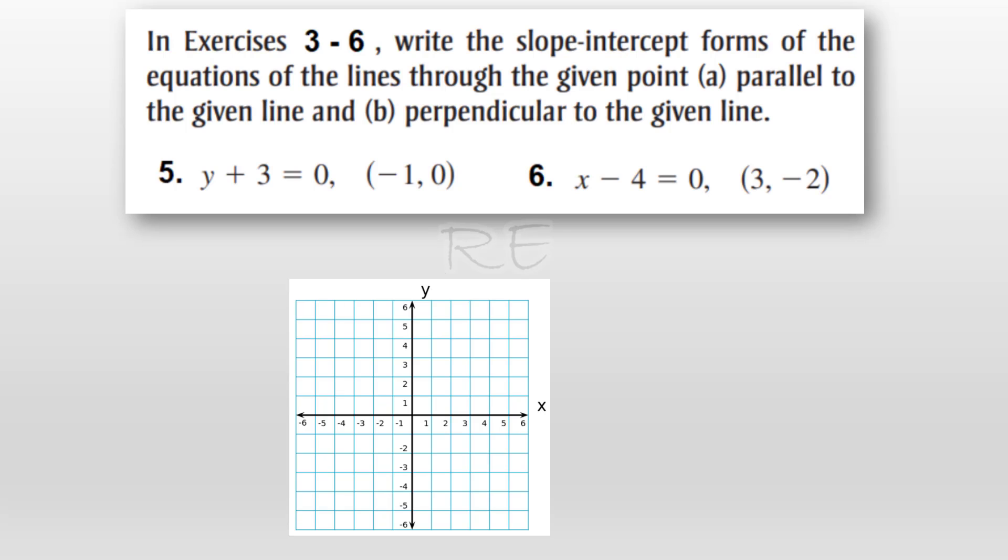When we solve y plus 3 equals 0 for y, after we subtract 3 from both sides, we get y equals negative 3, a horizontal line whose slope is 0. So this is what we have.